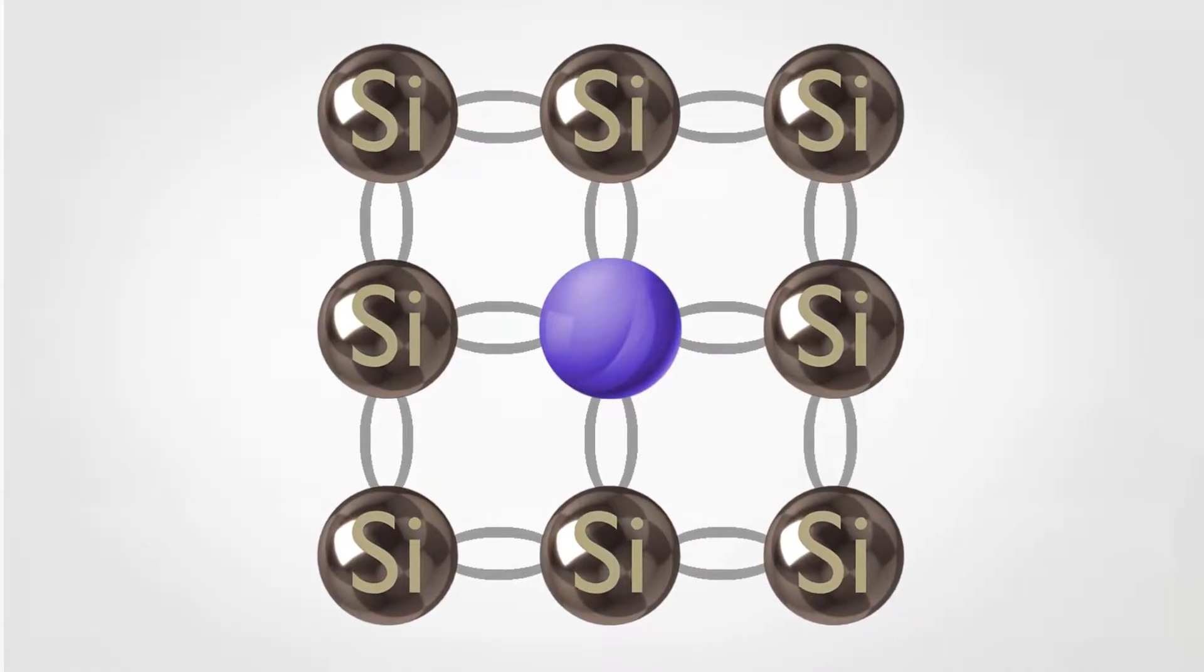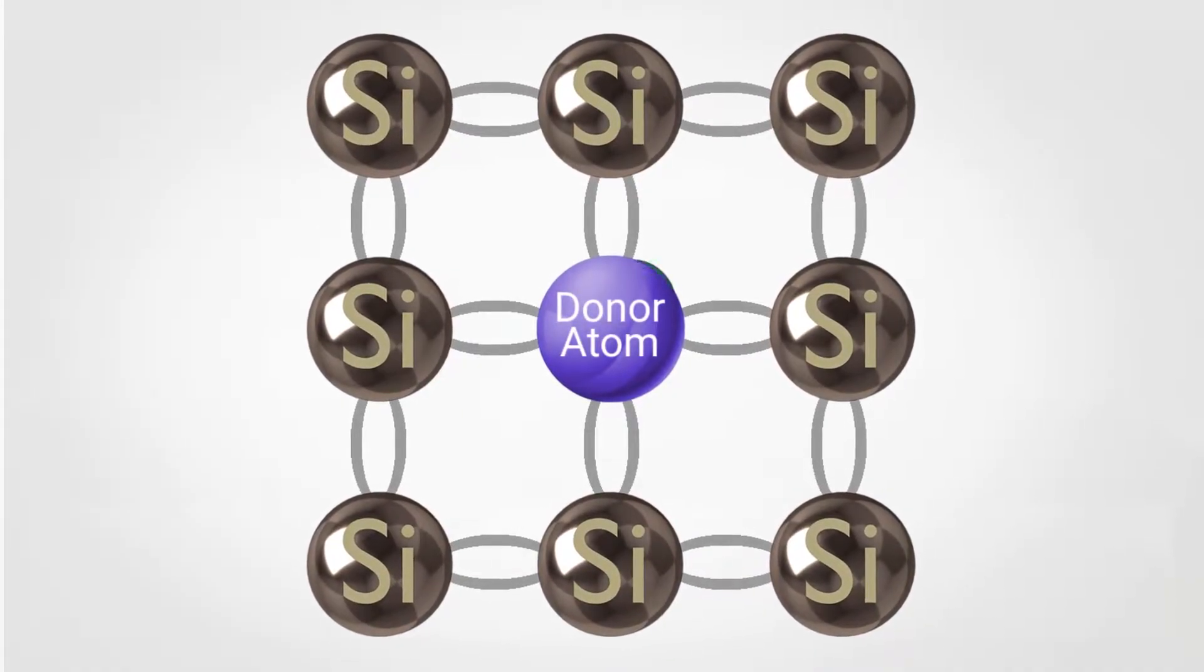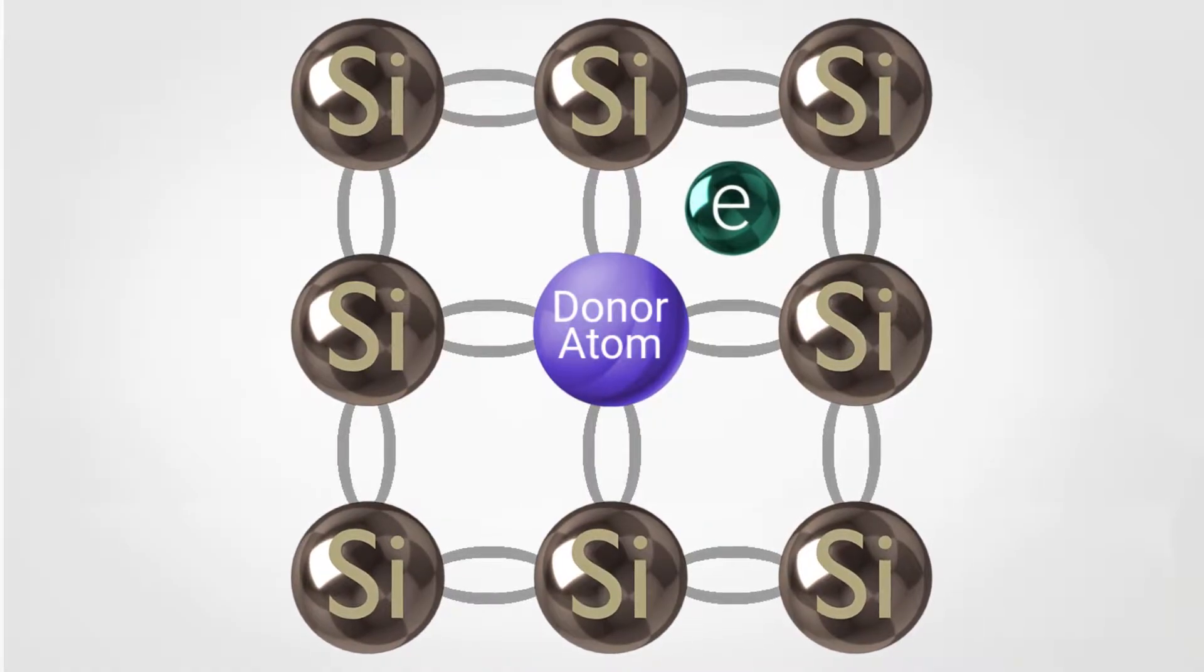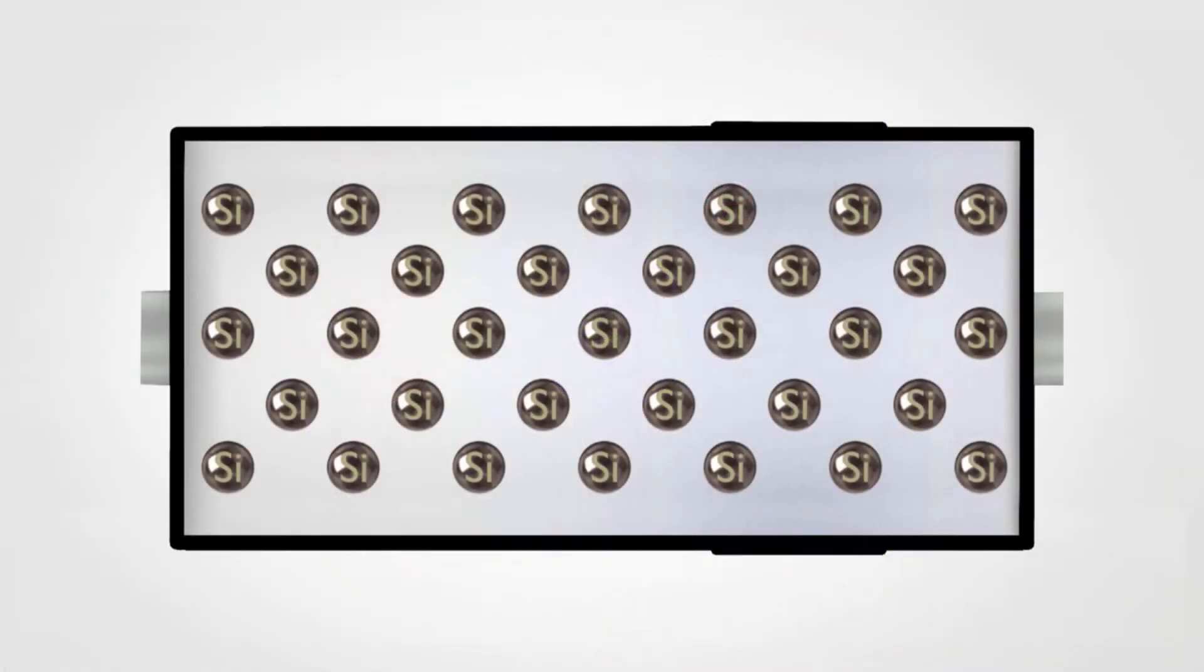These atoms are called donor atoms since they yield electrons to the crystal lattice of silicon. This creates two distinct parts within the diode with two different charge levels.